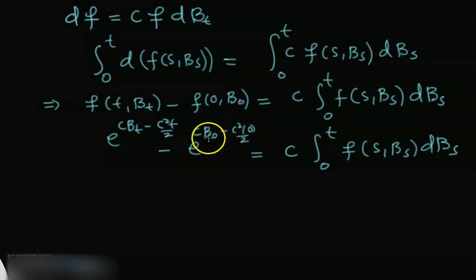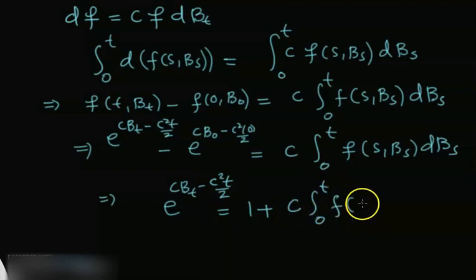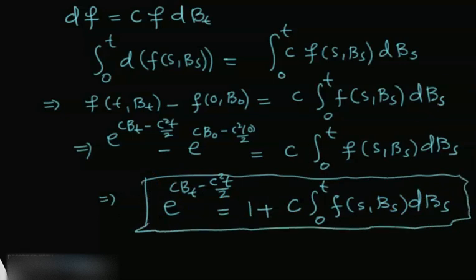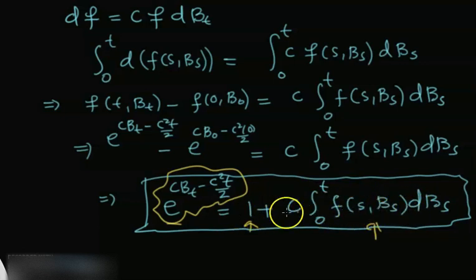Since B_0 = 0 from the properties of Brownian motion, e^0 = 1. So we get e^(c·B_t − c²t/2) = 1 + c·∫₀ᵗ f(s, B_s)·dB_s. What we have shown is that our function equals a stochastic Itô integral plus a constant. We know from the martingale property of Itô integrals that this integral is a martingale, and a martingale plus a constant is again a martingale.